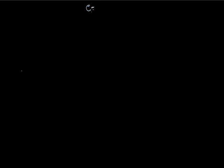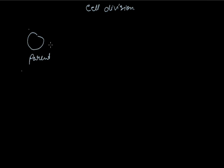We are going to discuss about cell division. What is cell division? Cell division is a process in which a parent cell is divided and produces two or more daughter cells. The parent cell will divide and it will produce two or more daughter cells.